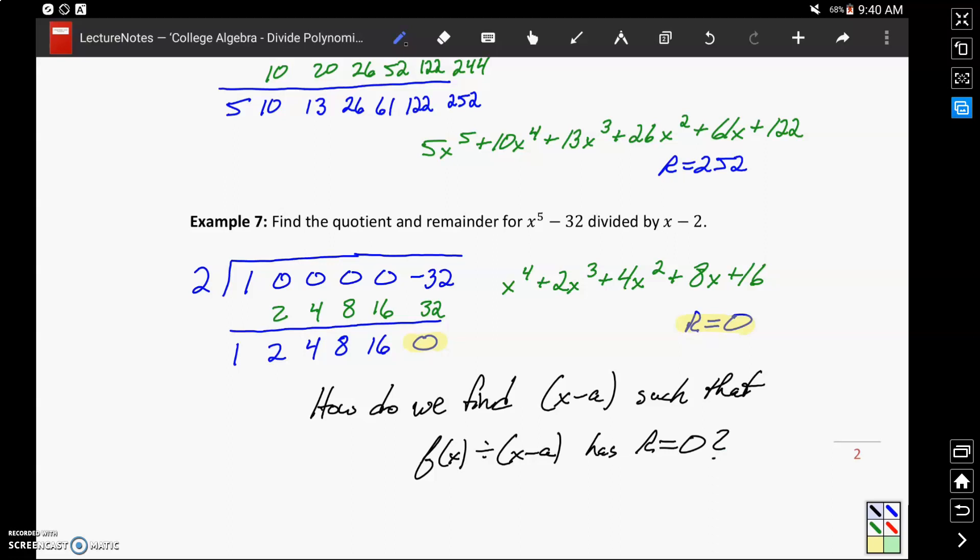And this process for synthetic division or polynomial long division are tools that we can use in order to verify once we think we've found such a quantity x minus a. We can use those tools to verify that that remainder is in fact 0, and we have a function that divides evenly into that original expression, giving us a result with a remainder of 0.